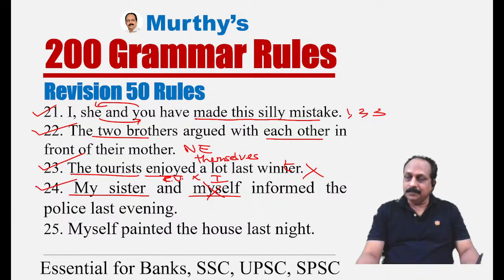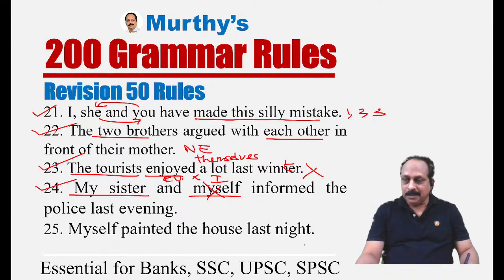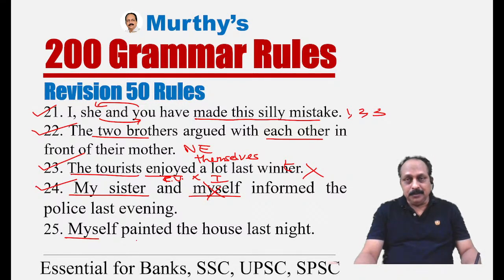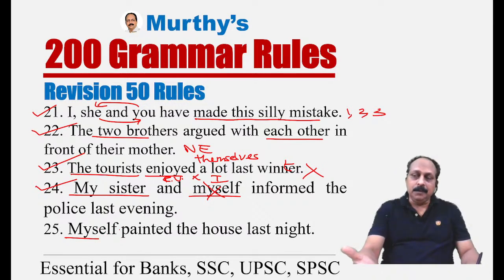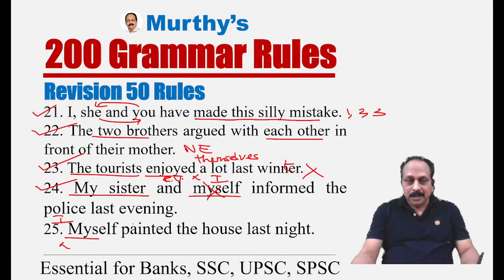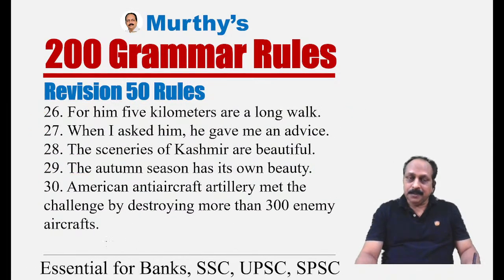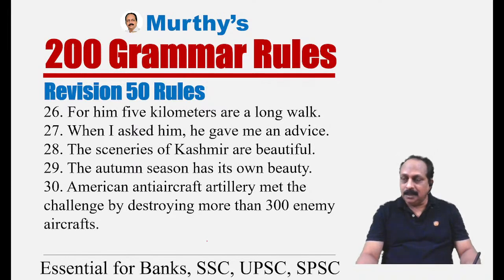Sentence twenty-five: 'Myself painted the house last night.' We cannot begin a sentence with a reflexive or emphatic pronoun. Also, at an interview when meeting someone, never say 'myself' followed by your name — that is incorrect. You must use the subject pronoun 'I' and then use 'myself' as emphatic. The correct sentence is: 'I myself painted the house last night,' where 'myself' is an emphatic pronoun.